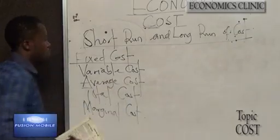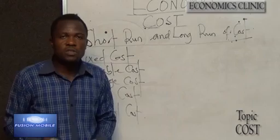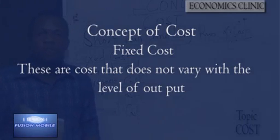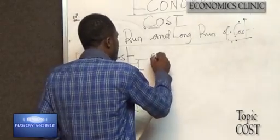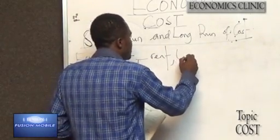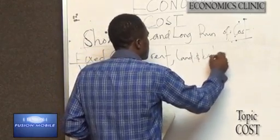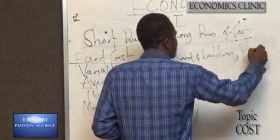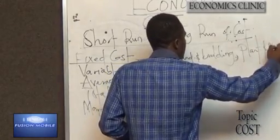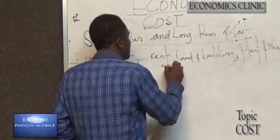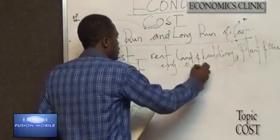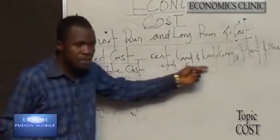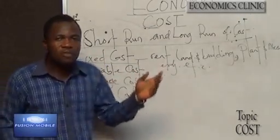Now, fixed costs. Fixed costs are costs that do not vary with the level of output. No matter the level of input, they remain constant. Examples are rents, land and buildings, plants and machinery, and so on. You can see they remain fixed. They do not vary with the level of output.